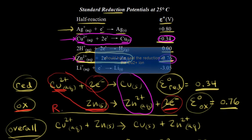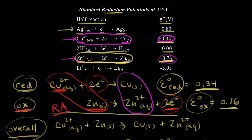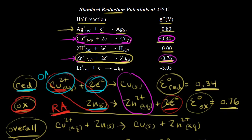Zinc is the agent for the reduction of copper, so we say that zinc is the reducing agent. Students sometimes find this confusing because zinc is being oxidized — but zinc is the agent for the reduction of something else, in this case copper two plus ions. Copper two plus is gaining those two electrons, so copper two plus is being reduced. Because copper two plus accepts those electrons, it allows zinc to be oxidized, making copper two plus the agent for the oxidation of zinc. So copper two plus is our oxidizing agent for this redox reaction.